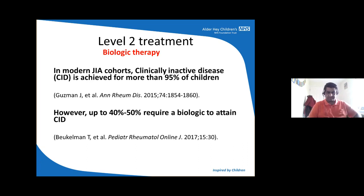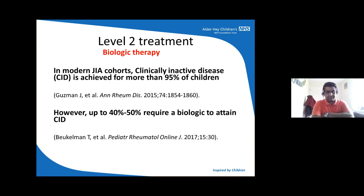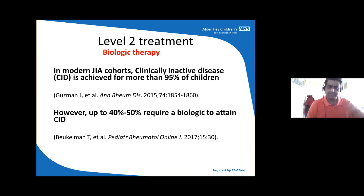Level two treatment is biologic treatment. In the last 20 years, the treatment of arthritis has been revolutionized by the invention of modern biologic medications. Nowadays over 95% of children can get clinically inactive disease. However, at least half of these patients require at least one biologic to attain clinically inactive disease — which is quite a significant number. The invention of biologics means we are getting patients into remission quickly and therefore avoiding long-term complications such as joint replacements.